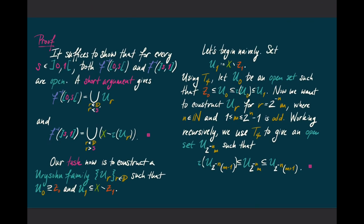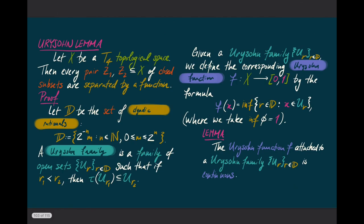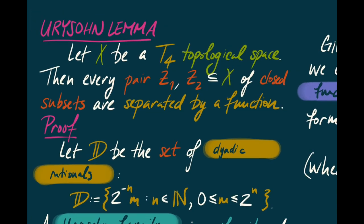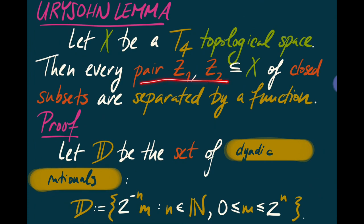That completes the proof. We've now shown that if we have a T4 topological space, then for every pair of disjoint closed subsets, we can find a function from X to the closed interval from 0 to 1 such that all points of Z1 go to 0 and all points of Z2 go to 1.